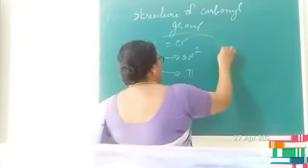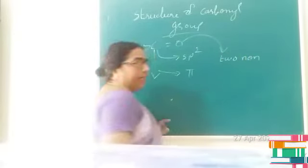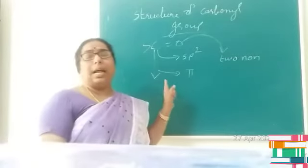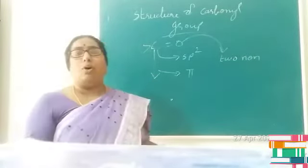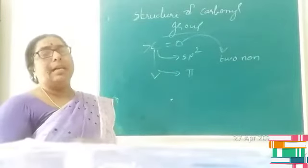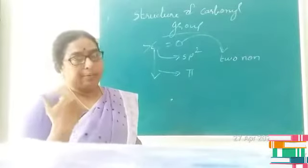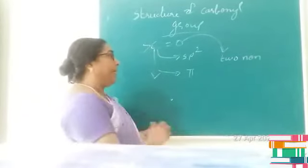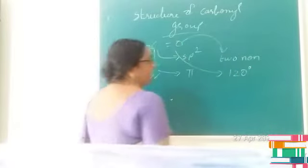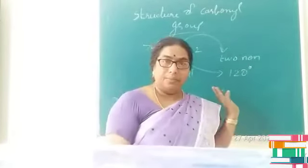In addition to this, oxygen will have two non-bonding electron pairs. So here, carbon along with the three other atoms will be lying in one plane, and the pi bond will be lying above or below the plane. The bonds will be lying at an angle of 120 degrees, giving a trigonal planar structure.